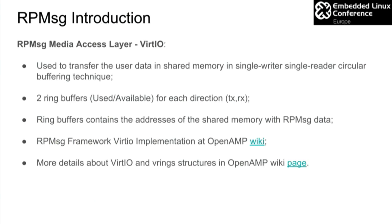The VIRTIO component — the MAC layer — transfers data in a shared memory region using a single-writer, single-reader circular buffer. Each side's transmission or reception has two ring buffers: used and available. The ring buffers contain the address of the shared memory location where the RP message data resides. The OpenAMP wiki has details on how the RP message framework uses VIRTIO and all the data structures.